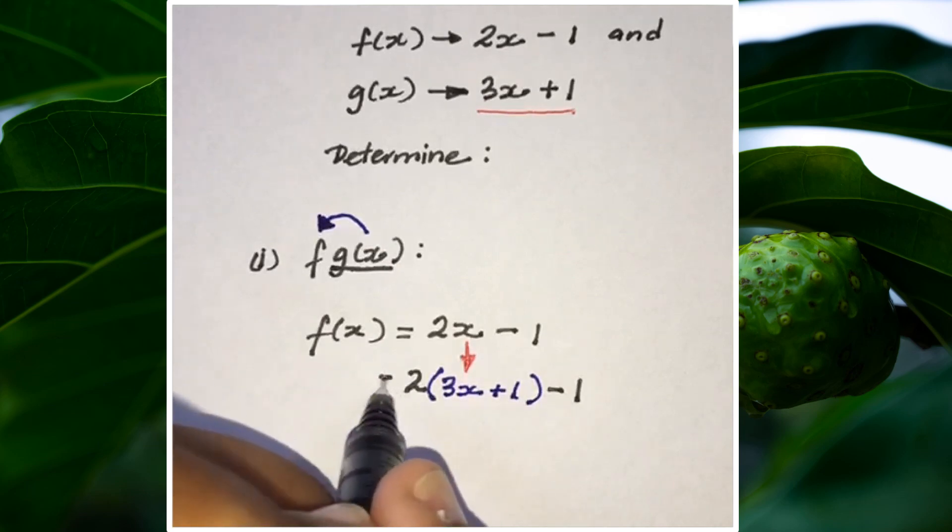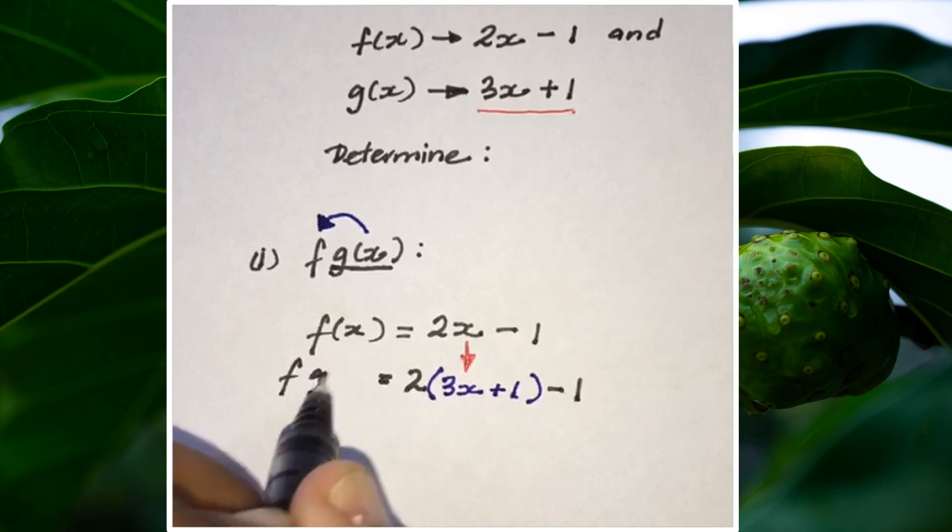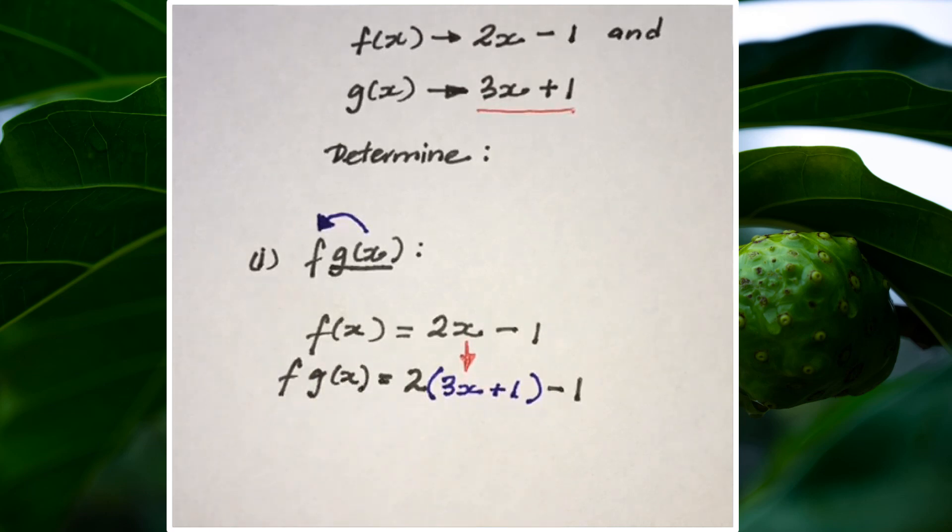Once you can do this, it's easy from here. So this will become f(g(x)). Notice that the function g, which is 3x + 1, is inside the function f, which is 2x - 1.